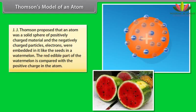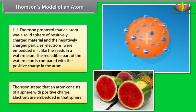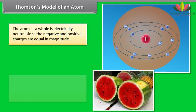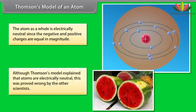The red edible part of the watermelon is compared with a positive charge in the atom. Thompson stated that an atom consists of a sphere with positive charge. Electrons are embedded in that sphere. The atom as a whole is electrically neutral since the negative and positive charges are equal in magnitude. Although Thompson's model explained that atoms are electrically neutral, this was proved wrong by the other scientists.